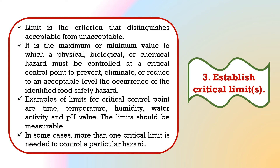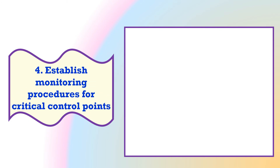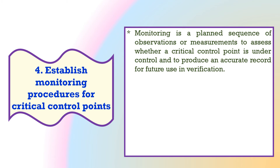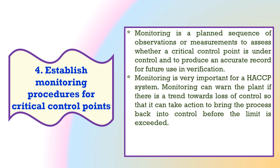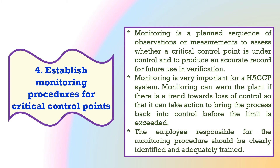The fourth principle is to establish monitoring procedures for critical control points. Monitoring means observing. It is a planned sequence of observations or measurements to assess whether the critical control point is under control and to produce an accurate record for future use in verification. Monitoring is very important for a HACCP system. The employee responsible for the monitoring procedure should be clearly identified and adequately trained.